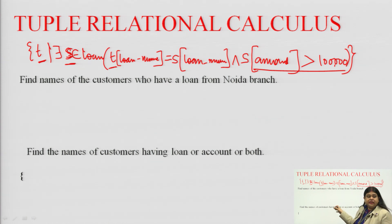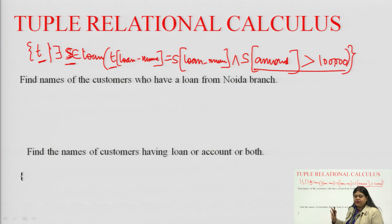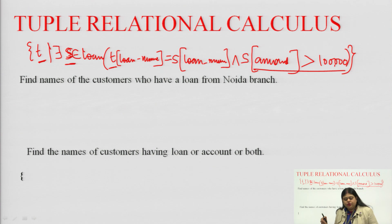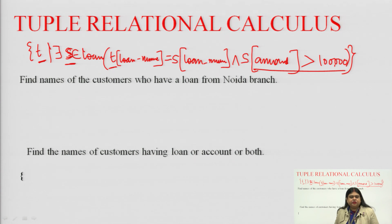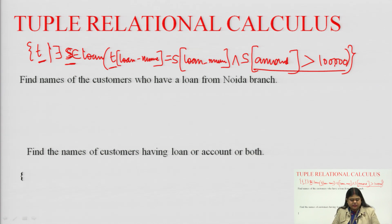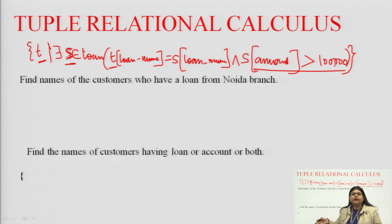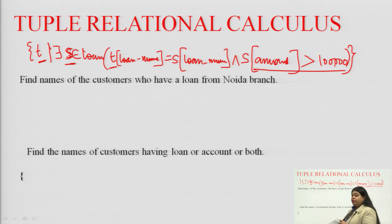The next example is a bit more complicated. It asks to find the name of customers who have a loan from the Noida branch. We will do it in two parts: first find the customer name, then find the branch from which the loan has been taken. It is a single query divided into two parts.